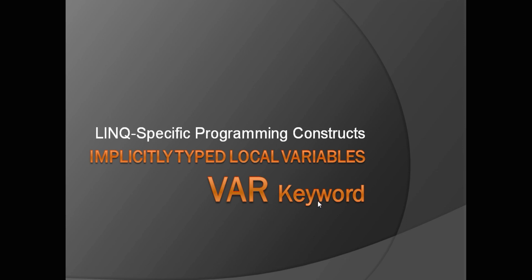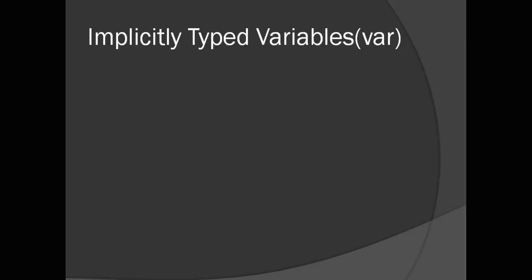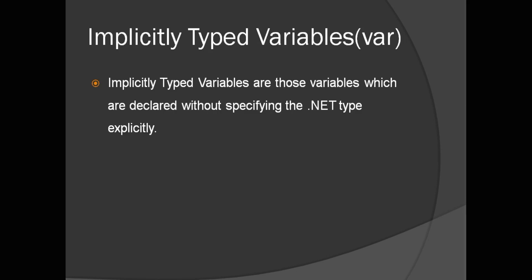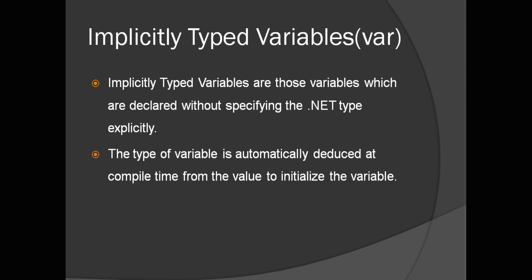So what is an implicitly typed local variable? Implicitly typed local variables are those variables which are declared without specifying the data type explicitly — meaning you will not define any .NET data type while declaring your variable. The data type is automatically deduced at compile time from the value used to initialize the variable.